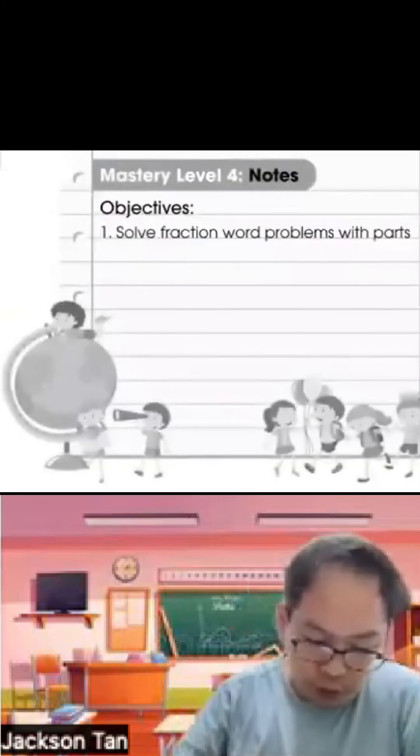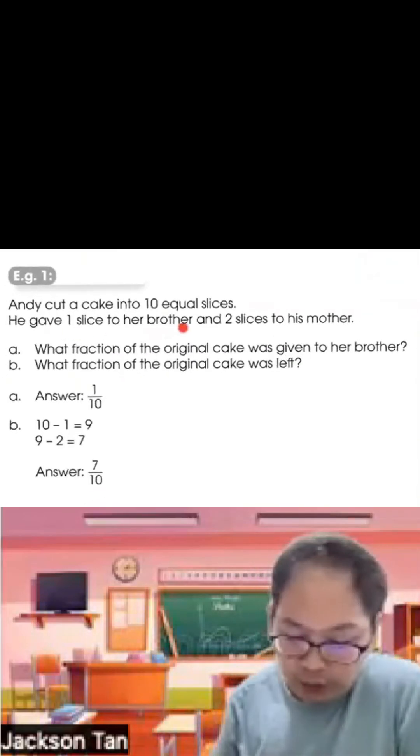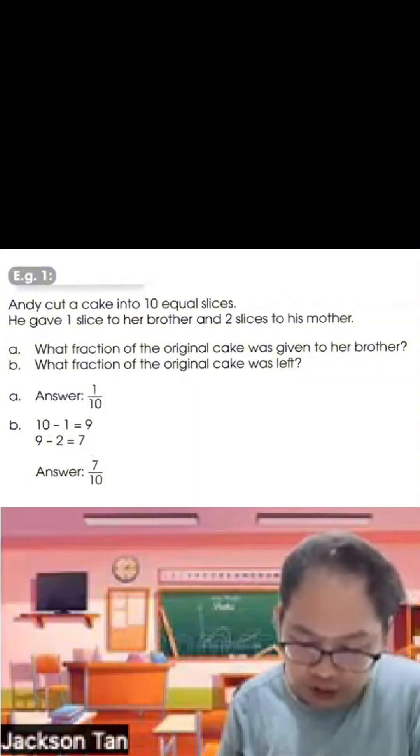Mastery level 4: solve fraction problems with parts. Emily cut a cake into 10 equal slices. She gave 1 slice to her brother, 2 slices to her mother. What fraction of the original cake did she give to her brother? Her brother is 1 slice, so it's 1 out of 10. And they asked what fraction of the original cake was left. So 10 minus 1 for brother is 9, minus 2 for mother, left 7. So answer is 7 out of 10.